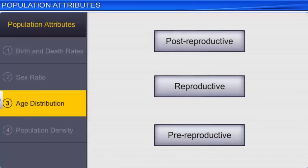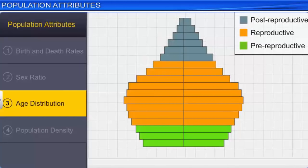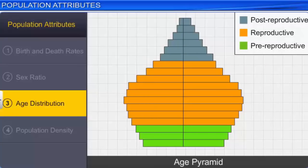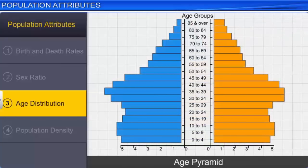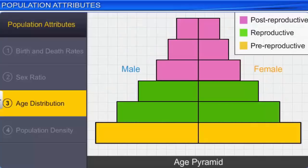Moreover, at any point in time, this population consists of individuals who may belong to pre-reproductive, reproductive, and post-reproductive age groups. A graphical representation of the various age groups is known as the age pyramid. In the human population, the age pyramid shows the age distribution of males and females in the same diagram. In fact, the shape of the age pyramid reflects the growth status of the population and indicates whether the population is growing, stable, or declining.